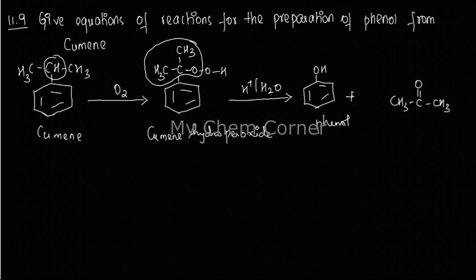You just have to write the equation. It's a two-step process: starting from cumene, when you add oxygen you get cumene hydroperoxide. Further, when you do acid hydrolysis, you will get phenol and acetone. This is a very frequently asked question.